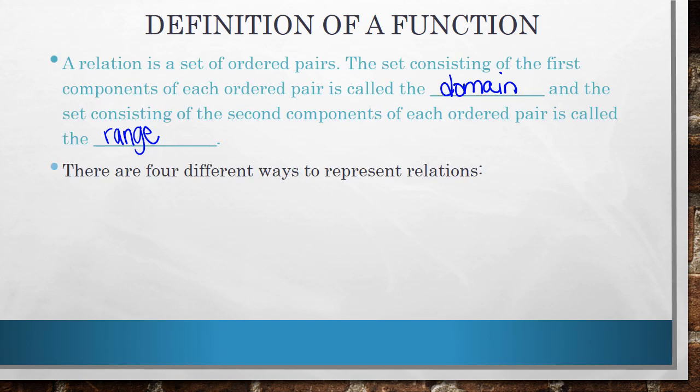And the set consisting of the second components of each ordered pair is called the range. There are four different ways to represent relations. Those ways are as formulas, graphs, ordered pairs, or by mappings.